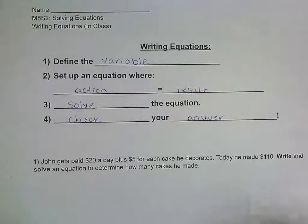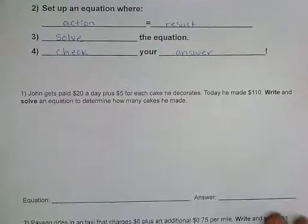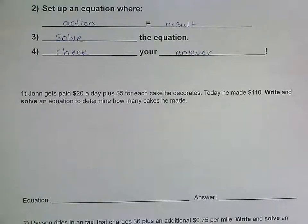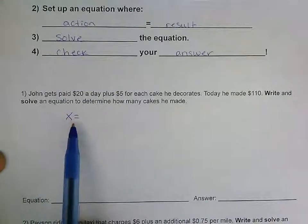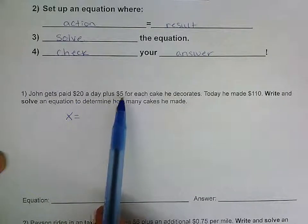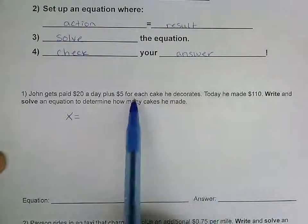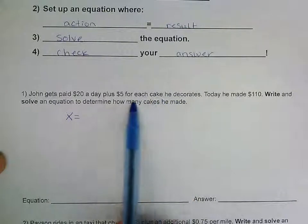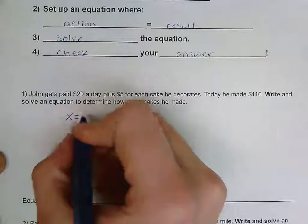Our first example says: John gets paid $20 a day plus $5 for each cake he decorates. Today he made $110. Write and solve an equation to determine how many cakes he made. The first thing we do is define our variable — our variable represents what we don't know. He gets paid $20 a day, $5 for each cake, and makes $110 total. The thing I don't know is how many cakes he's made.